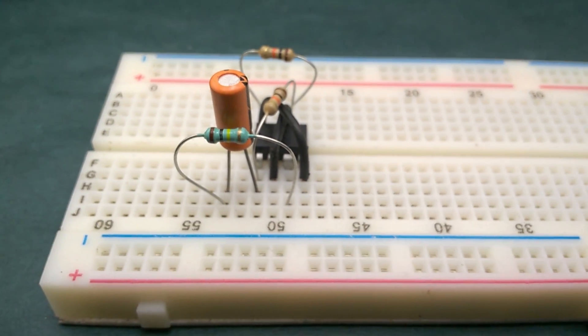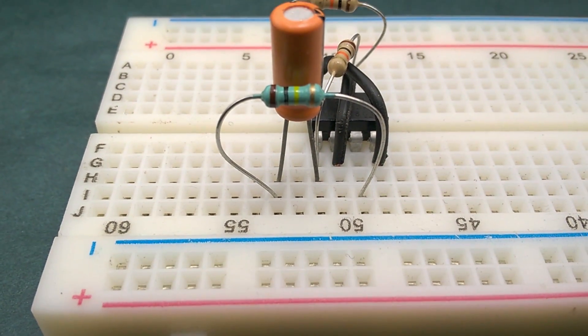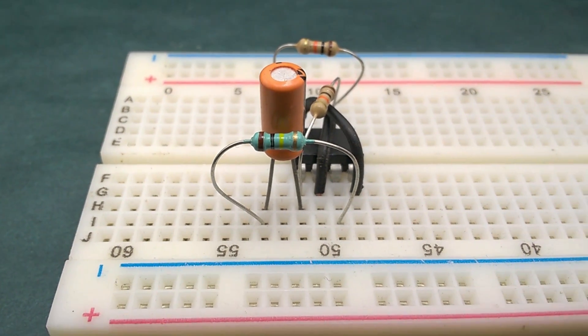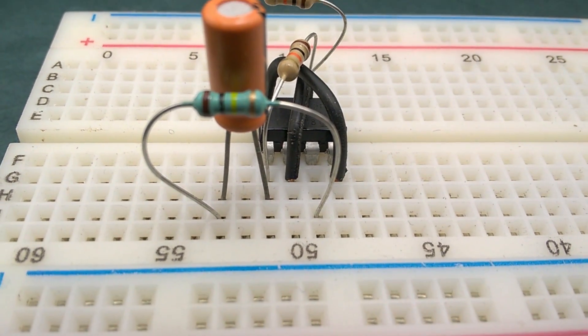Place a 100k resistor with one of its terminals connected to the positive terminal of 1uF capacitor and the other terminal connected to the output of 555 timer IC which is pin 3.